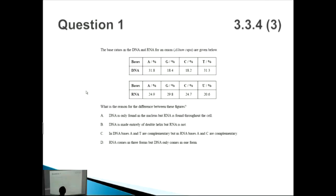Let's look at this question. The base ratio in the DNA and RNA for an onion, or Allium cepa, are given below. We're given a couple of different tables. What is the reason for the difference between these figures? The first thing that we notice is that we're talking about both DNA and RNA here.